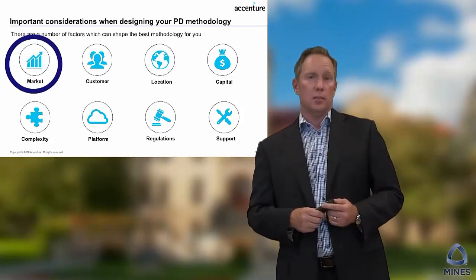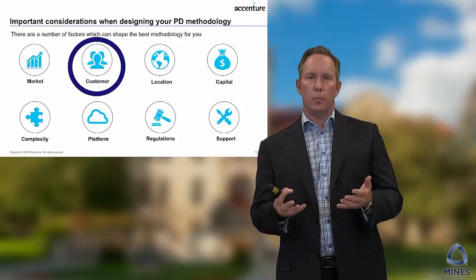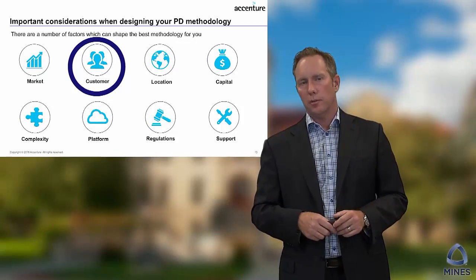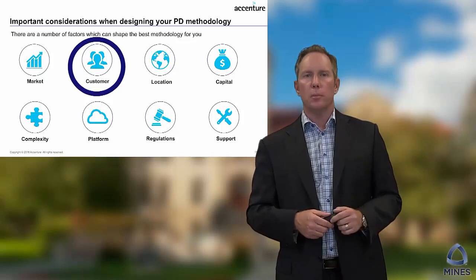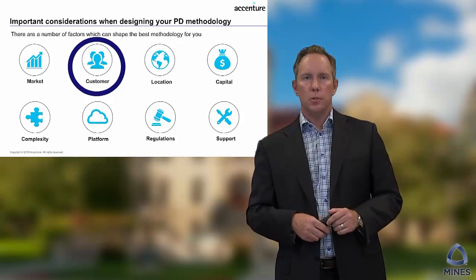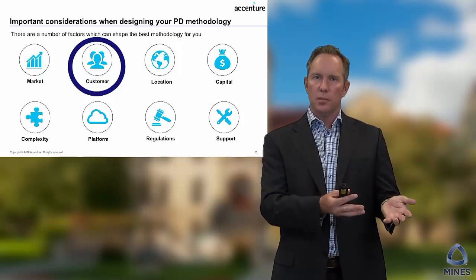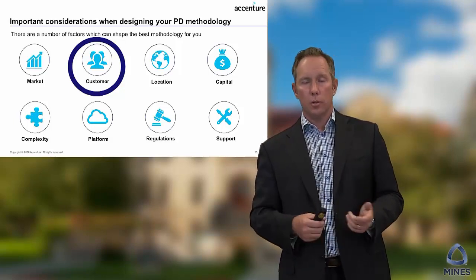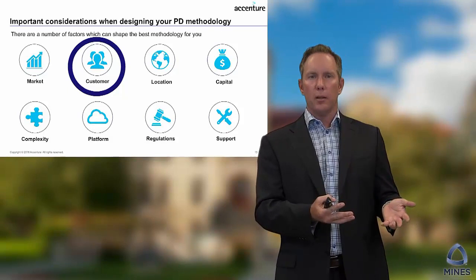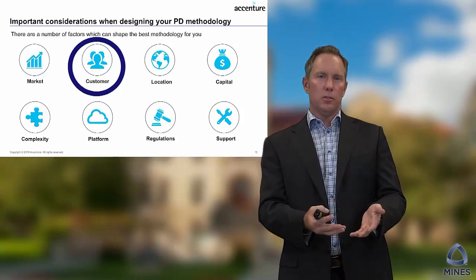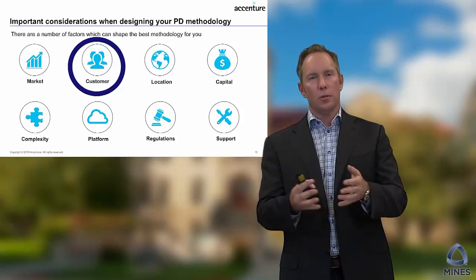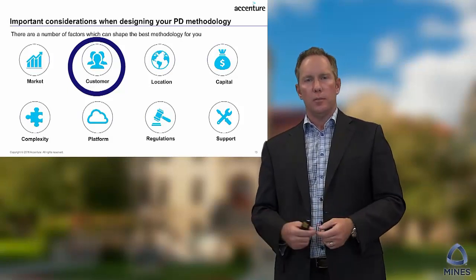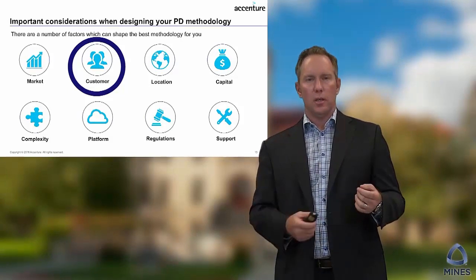The second consideration is the customer. Who are your buyers? Who is your customer, and then who is your user or consumer of the product? They may actually be different people — one group buys the product and a second person uses it. This is the case you see with toys, where parents buy the product but it's usually the kids playing with them — so you have a different consumer versus buyer.